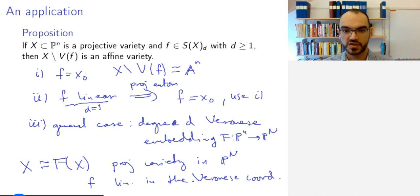And so we can use part 2 to conclude that removing V(f) leaves us with an affine variety sitting inside F(X). But since F(X) is isomorphic to X, in this case we get what we want.